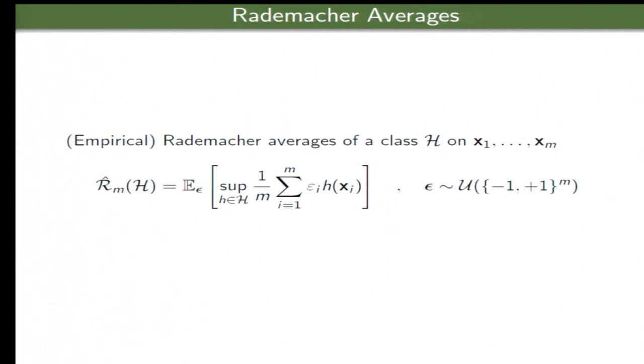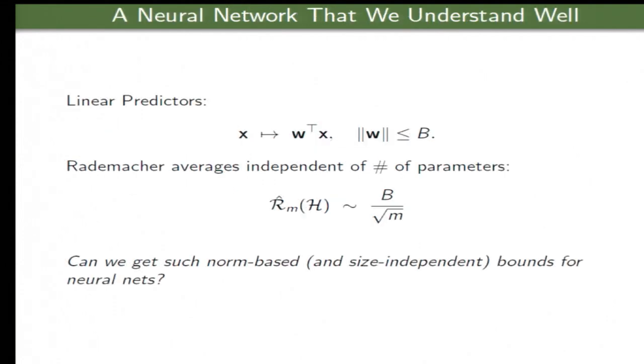And this class H will be neural networks with some complexity bounded, such as product of the norms of the weight matrices. So what do we know? Well, there is one neural network we understand well, and that's the linear case. This is a very simple neural network where we bound the Euclidean norm of W by, let's say, B. And it's a one-line proof to show that the Rademacher averages, in this case, behave just as one gets an inequality behave like B over square root of M. And this is independent of the dimension of the space, independent of the number of parameters. And so the question is, can we get such clean results for neural networks that do not depend on any other things such as the depth or the width of the network and so forth?